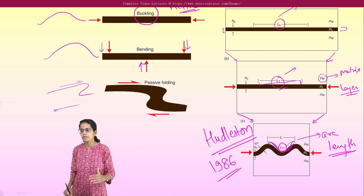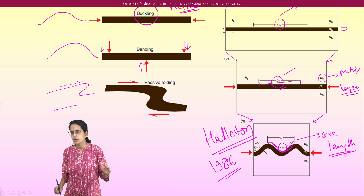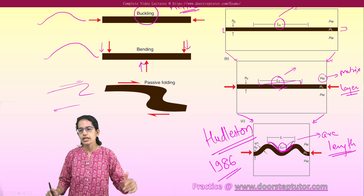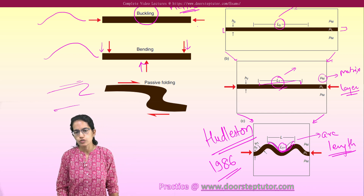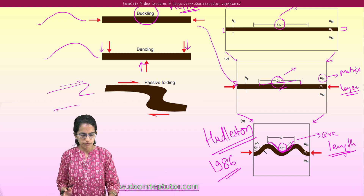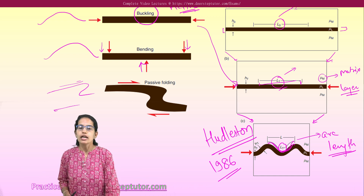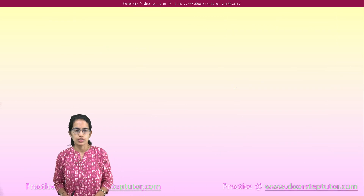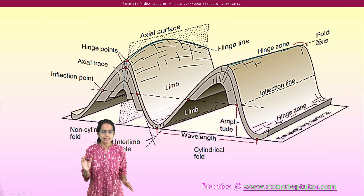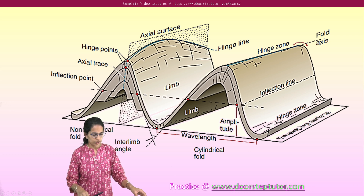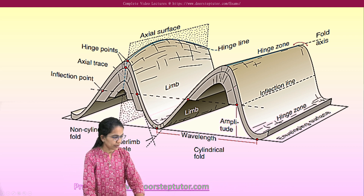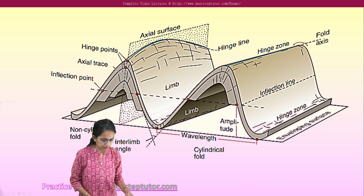This concept was devised by Haldestan. In 1986, Haldestan talked about active folding and passive folding. Active folding can initiate when a longer piece of rock is being shortened through compressional forces, which are active forces in nature.